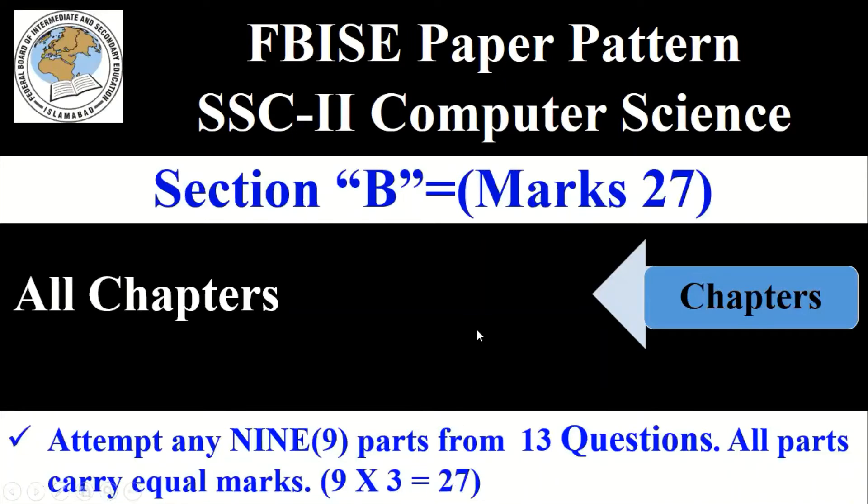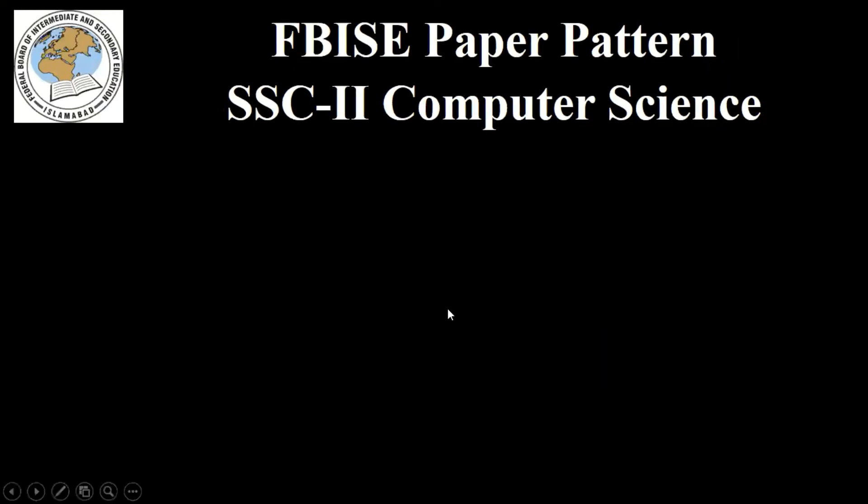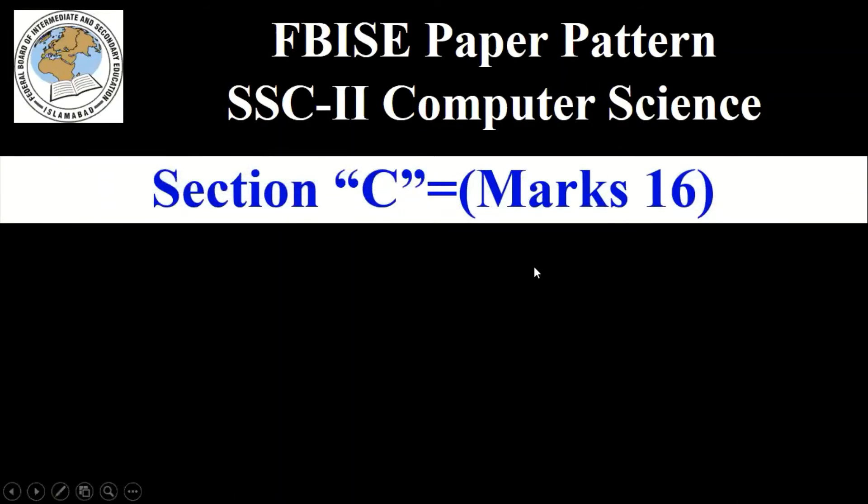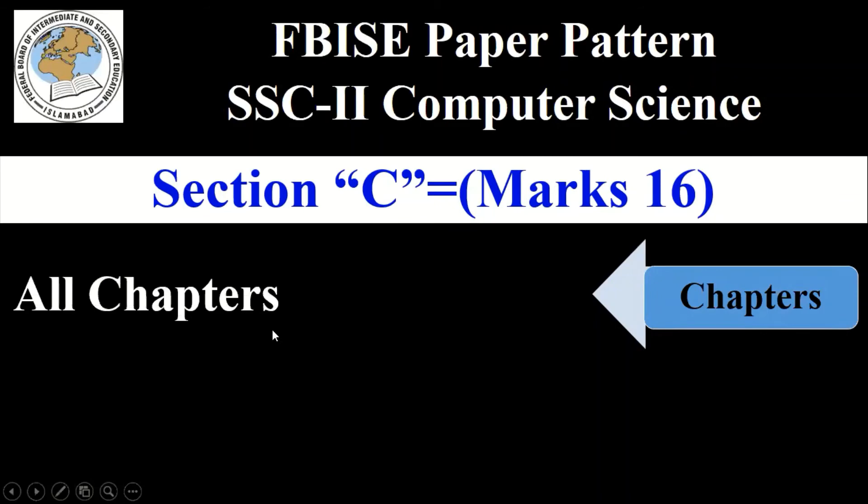So you will get 27 marks in Section B. Let's move students towards the next section of computer science paper pattern for class SSC-2. Section C. Section C has 16 marks and which chapters does it cover? All chapters. In Section C it also covers all chapters and Section C has long questions that cover all chapters of your syllabus.